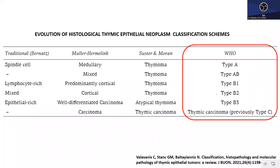Now let's talk about thymic epithelial neoplasms. The nomenclature has evolved through older classification schemes — the Bernard scheme, the Müller-Hermelink scheme, the Suster-Moran scheme — and more recently the WHO classification, which divides thymic epithelial neoplasms into type A, AB, B1, B2, and B3 thymomas, with thymic carcinoma included as a separate category.